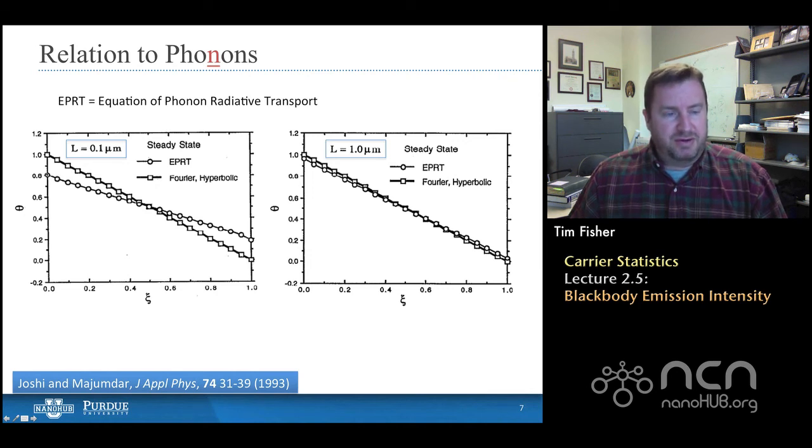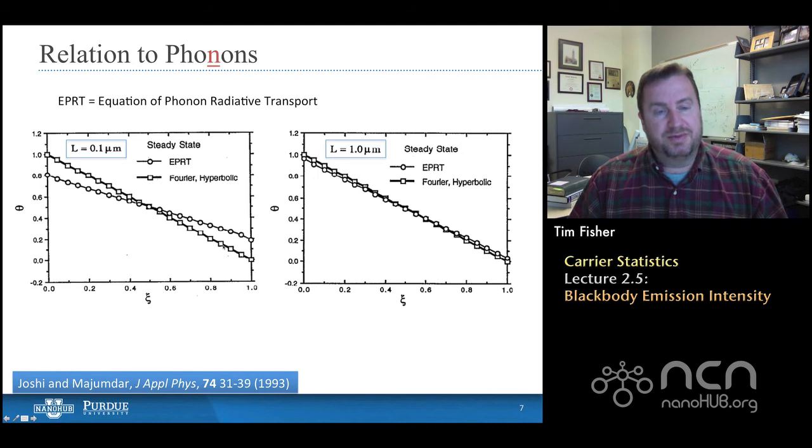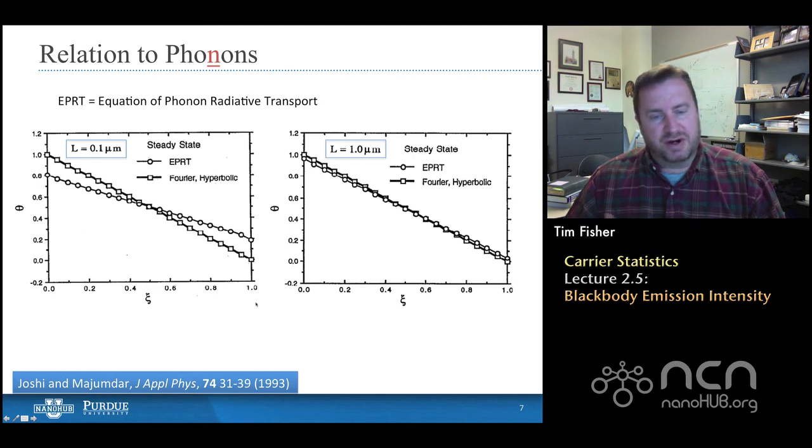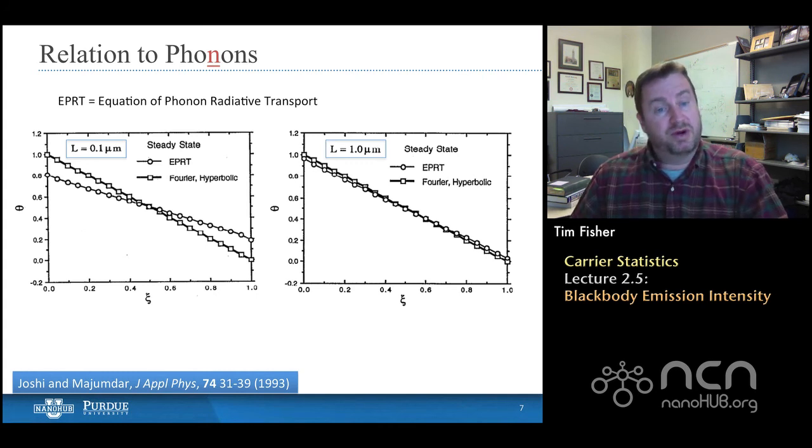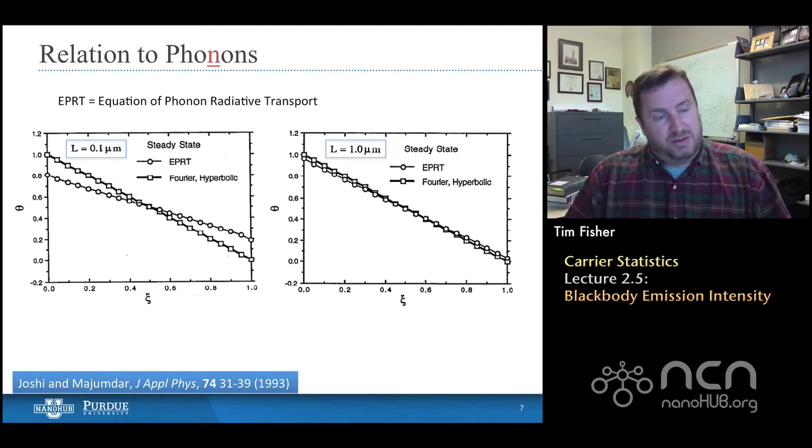That temperature jump is a ballistic effect and it's not captured by the usual approach for solving heat conduction problems. So that's Fourier's law. In this case, it's a slight variation on Fourier's law. It's a hyperbolic variation. But nevertheless, the principle remains that in that case, we have a continuous temperature field. The boundary temperature is one and in the material just next to the boundary, it's also very, very close to one. Whereas if we treat this more like a radiation problem, then we see that we can actually predict a temperature jump.